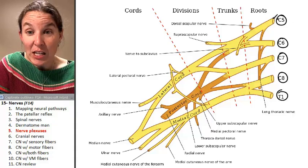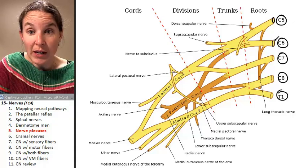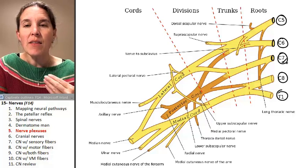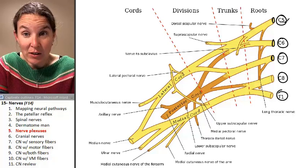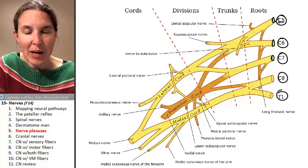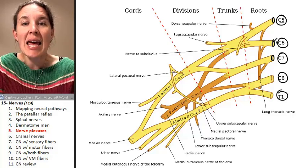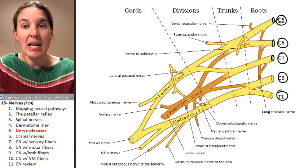These are spinal nerves. They're actually, each one of these cords right here is actually the anterior ramus for this spinal nerve. So this is the anterior ramus of C5. This is the anterior ramus of C6 and so on.